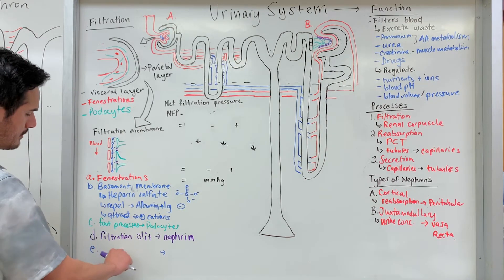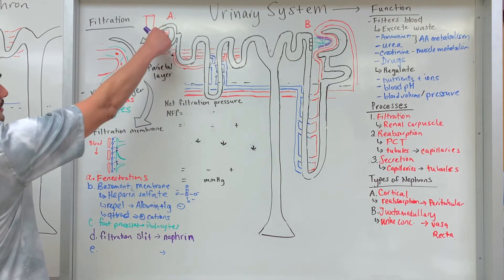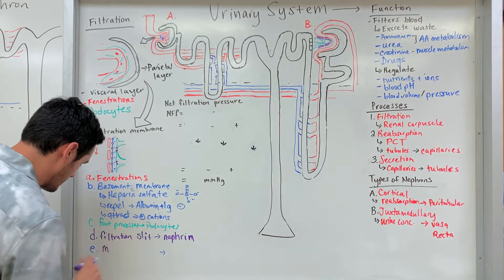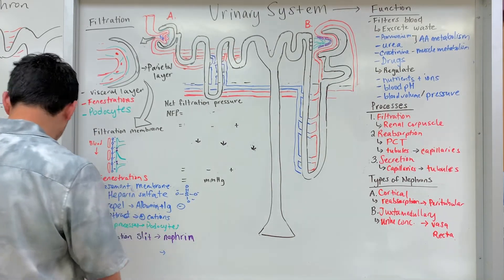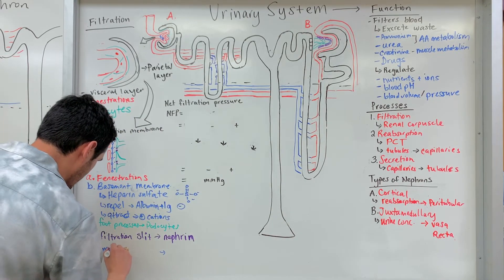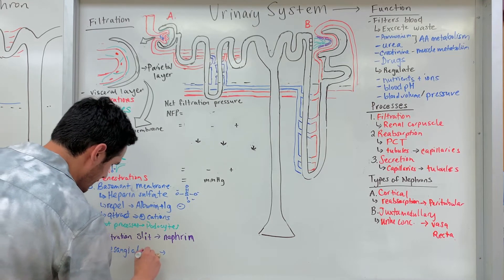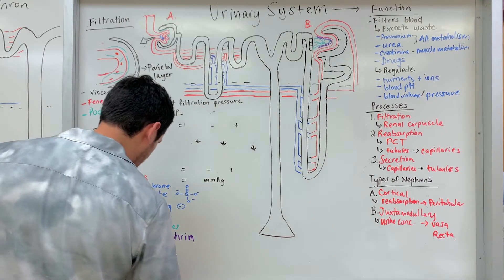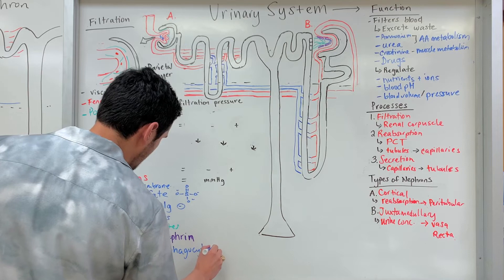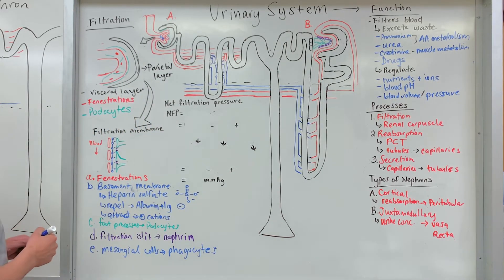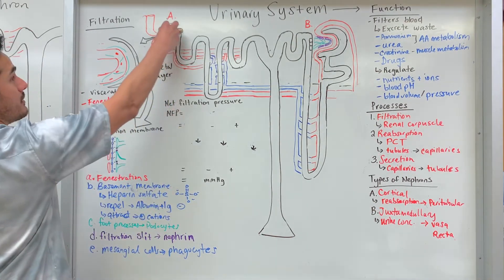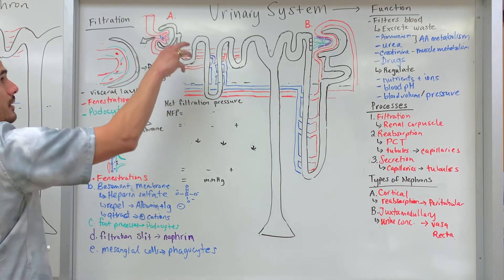Also shown here in blue are the mesangial cells. These mesangial cells are phagocytes that help engulf or break things down. For instance, if a protein gets through and gets caught up within the nephrin, these mesangial cells will migrate and start to break that protein down.